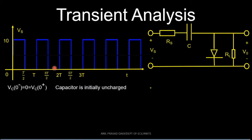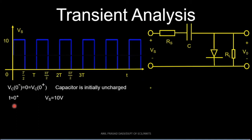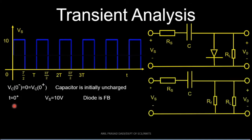We start with the assumption that the capacitor is initially uncharged, so Vc(0−) = Vc(0+) = 0. At t=0+, the input jumps to +10 volts, which forward biases the diode. The diode is replaced by its small forward resistance Rf. Since the capacitor voltage cannot change instantaneously, Vc remains 0 at t=0+.